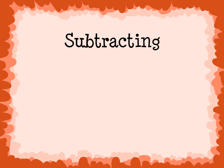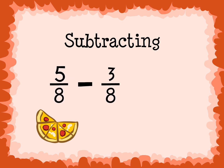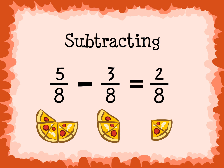Subtracting: 5 eighths minus 3 eighths. The denominators are both 8, so we simply subtract 5 minus 3, which equals 2. We place the 2 over the common denominator 8, and get 2 over 8, or 2 eighths. So 5 eighths minus 3 eighths equals 2 eighths.